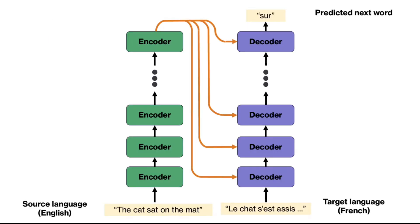Here is the full diagram of the encoder-decoder layers. The full sequence from the source language is passed to the encoder and the partially complete sequence from the target language is passed to the decoder. The encoder processes the input through all its layers, and the final output of the entire encoder stack is then passed to each decoder layer for cross-attention.